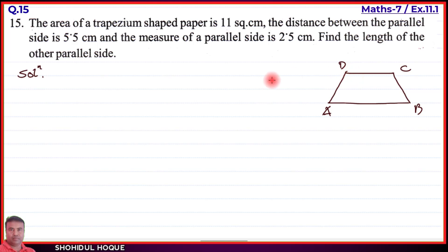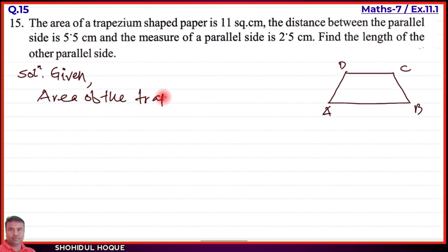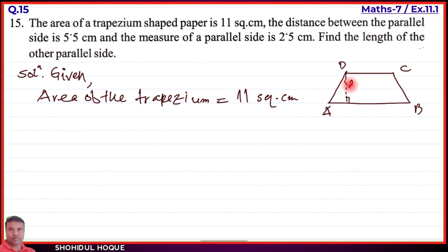Let's write down the given information. Area of the trapezium is equal to 11 square centimeters. The distance between the parallel sides (height, h) is given as 5.5 centimeters. The measure of one parallel side (a1) is given as 2.5 centimeters.